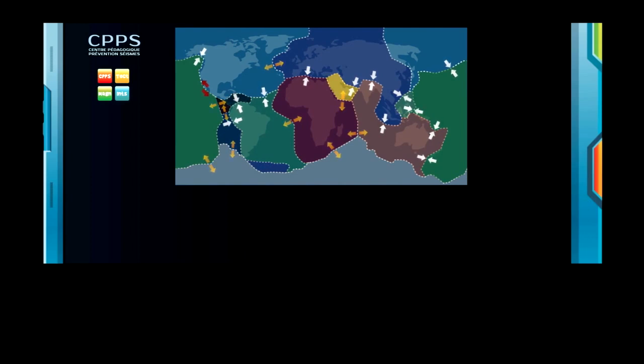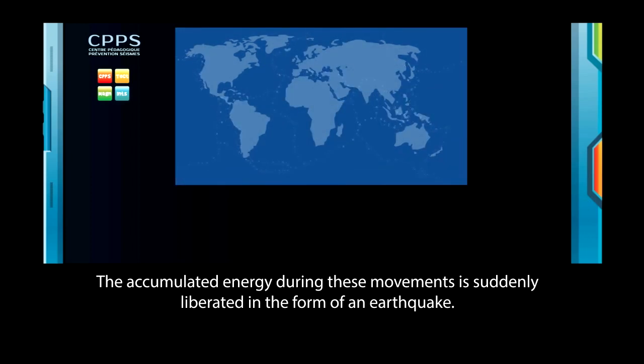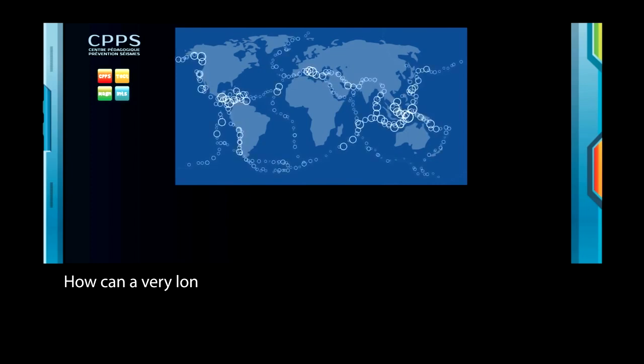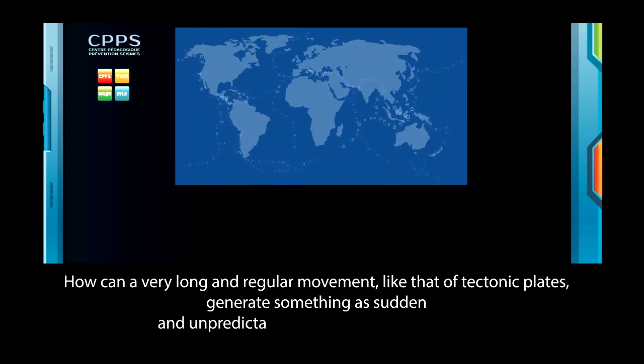The accumulated energy during these movements is suddenly liberated in the form of an earthquake. How can a very long and regular movement, like that of tectonic plates, generate something as sudden and unpredictable as the great earthquakes?